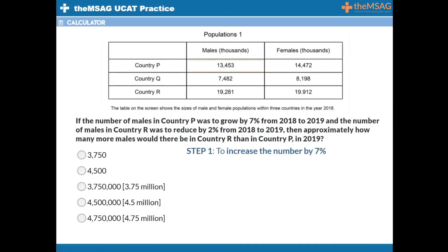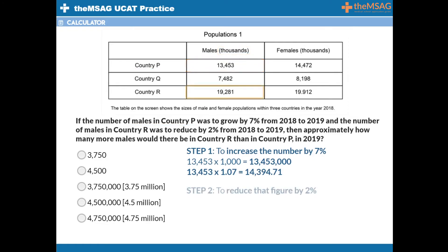Step 1 would be to multiply 13,453 — representing the number of males in country P — by 1.07 to increase the number by 7%. You should notice from the table column headings that this figure is the number of males in thousands, so the actual number of males in country P in 2018 was 13,453,000. Step 2 would be to multiply 19,281 — representing the number of males in country Q — by 0.98 to reduce the figure by 2%.